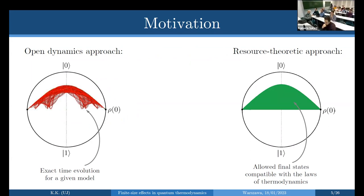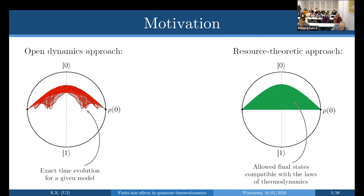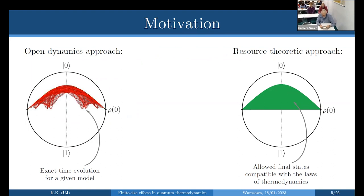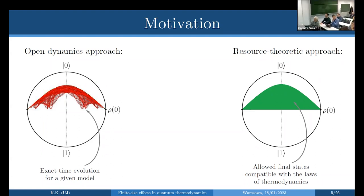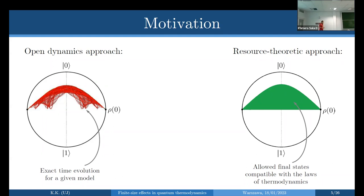The question remains: what does it mean to know something about the final state compatible with the laws of thermodynamics? The classical understanding of thermodynamics is that it applies in the many-copy sense. You prepare the system in the initial state, make an experiment where it interacts with the bath, repeat it 10,000 times, do tomography after each run to recover the final state — it's going to be somewhere in the allowed region. That's really all there is to it.